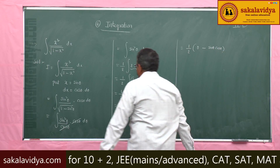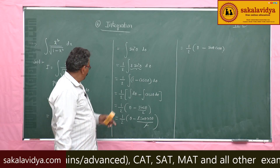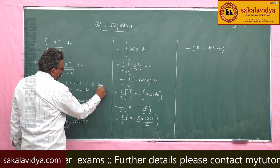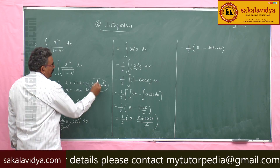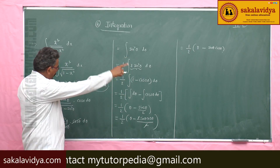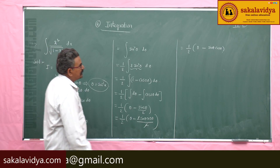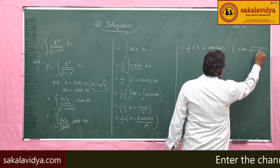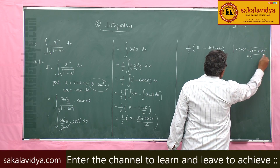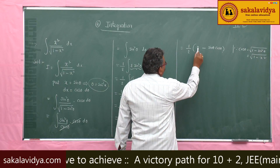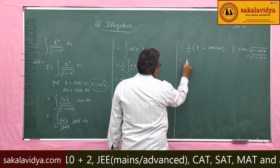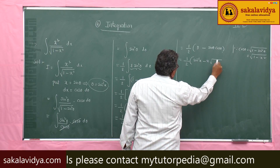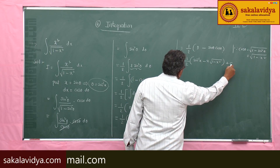Our answer should be in terms of x. Since x = sin θ, we have θ = sin⁻¹ x. For cos θ, we use cos θ = √(1 − sin²θ) = √(1 − x²). Substituting these values, the final answer is: (1/2)(sin⁻¹ x − x√(1 − x²)) + C.